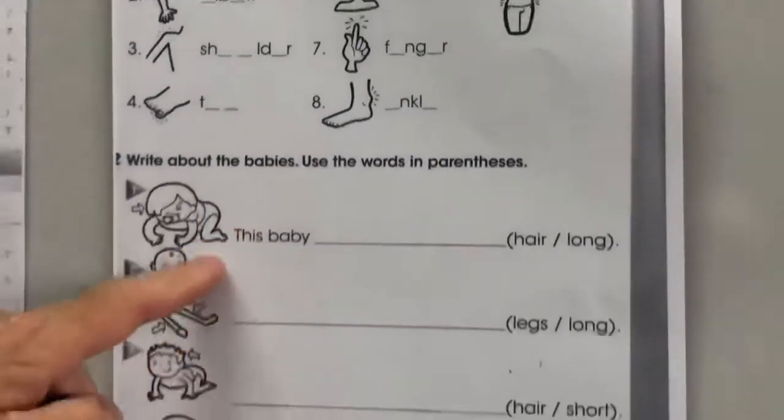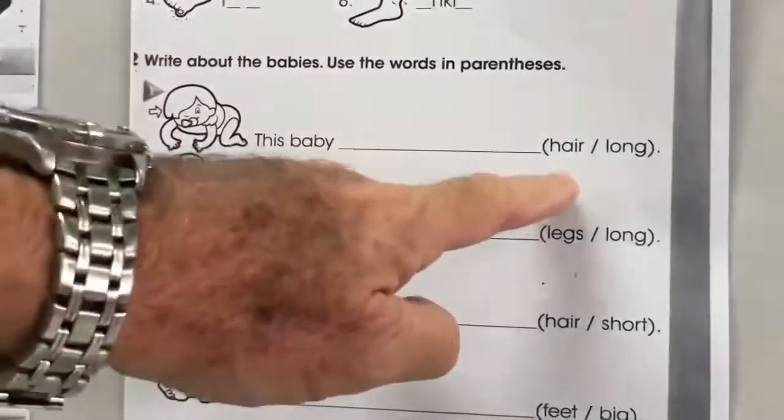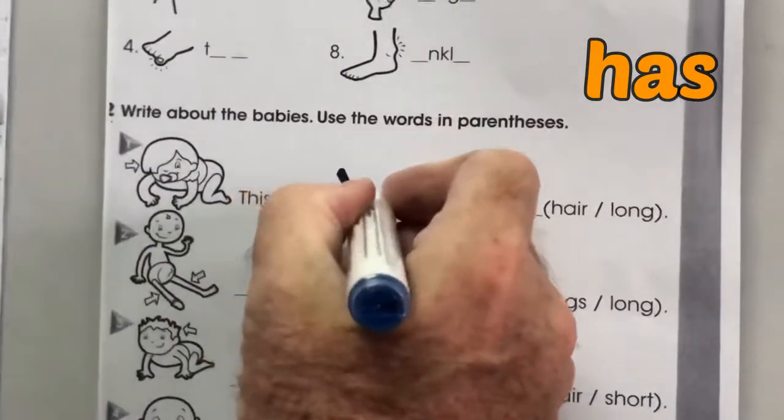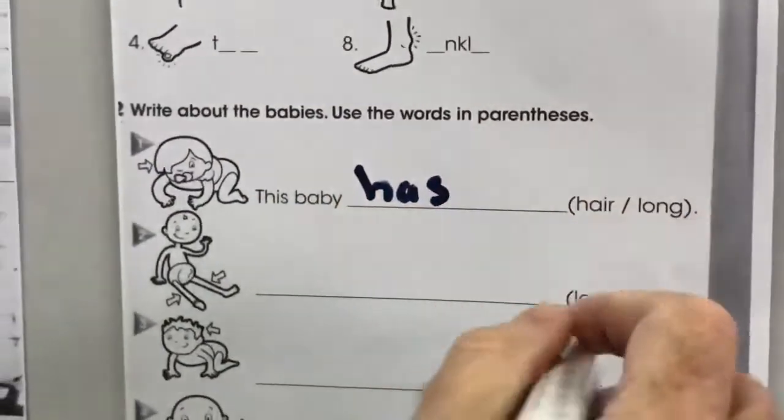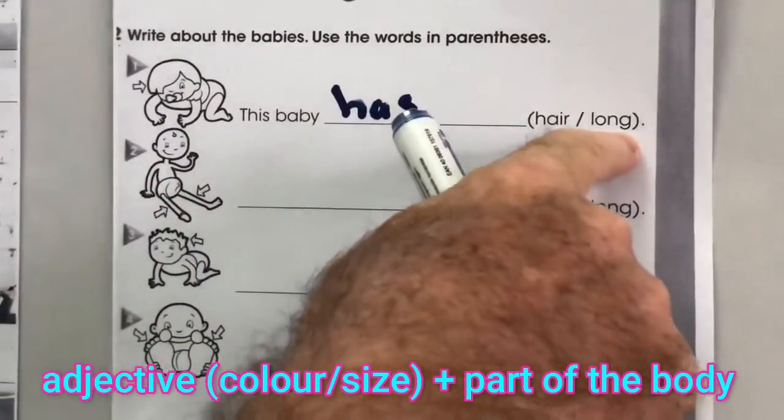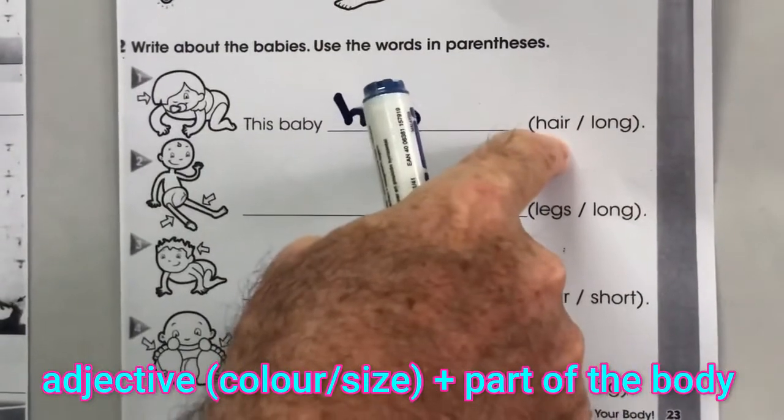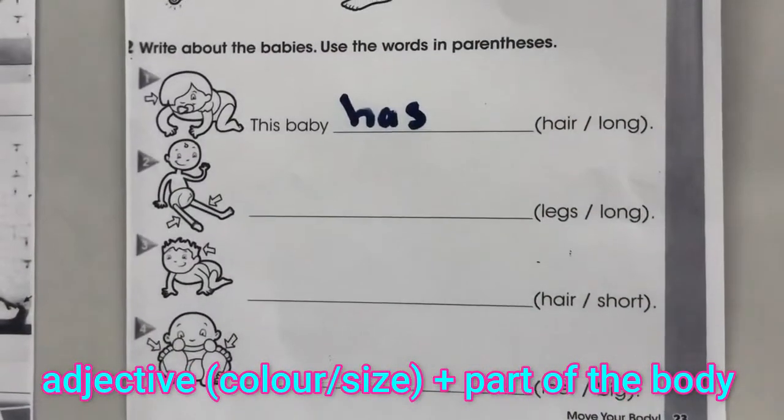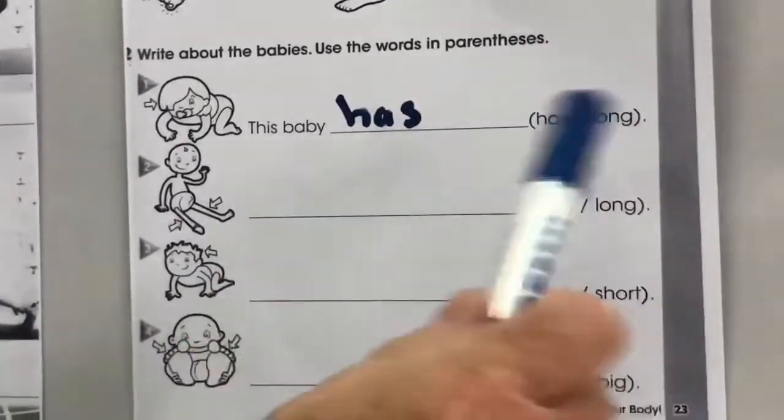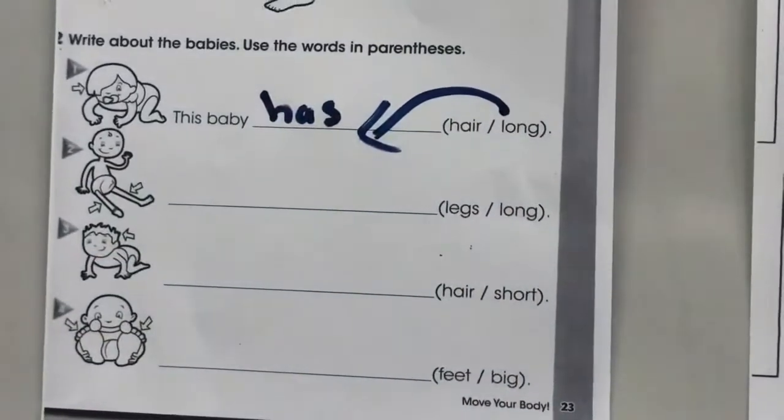And a little bit here, let's talk about the baby. This baby... we're going to use has. And when we're talking about the part of the body, remember, we put the adjective, the colour or the size before the part of the body. It's going to be, this baby has long hair. Not hair long.